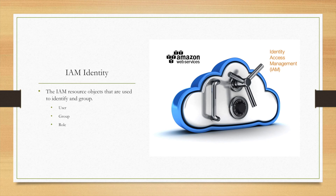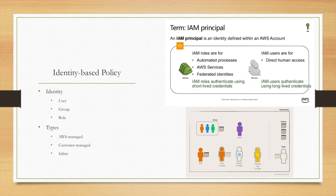We also need to understand the IAM identity concept. It refers to the IAM resource objects that are used to identify and group. There are three things that belong to the IAM identity: user, group, and IAM role. To understand identity, we can look at the identity-based policy, where user, group, and role are the three identity types.